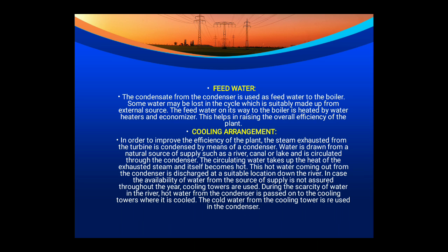To improve efficiency, the steam exhausted from the turbine is condensed in the condenser. Water is drawn from a natural source such as a river, canal, or lake and circulated through the condenser; this circulating water absorbs heat from the exhaust steam and becomes hot. When availability of water from the supply source is not assured throughout the year, cooling towers are used. During water scarcity, hot water from the condenser is passed to the cooling tower where it is cooled. There are two types: forced draft cooling tower and natural draft cooling tower. The cooled water from the cooling tower is then reused in the condenser.